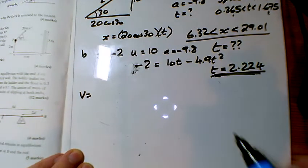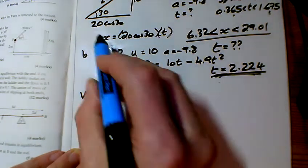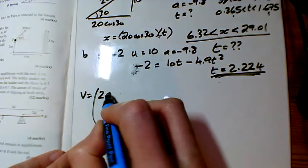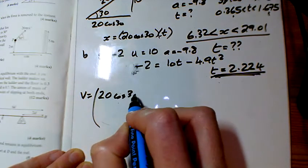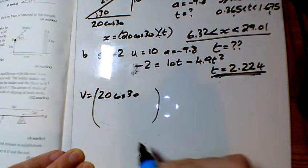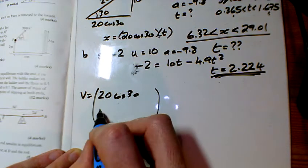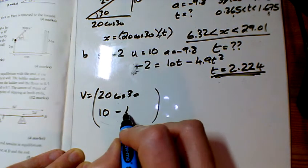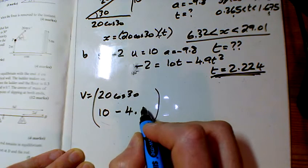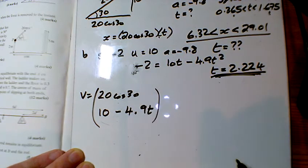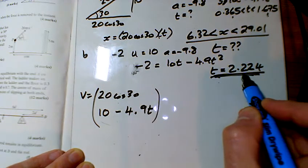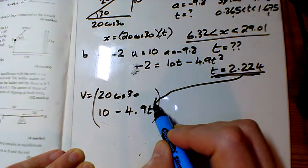So I find the speed as it hits the ground. The speed horizontally of course never changes, so I've got 20 cos 30. And vertically, the speed is u plus a t. I've got 10 minus 9.8 t. We know what t is, so I'm going to put all that in there.